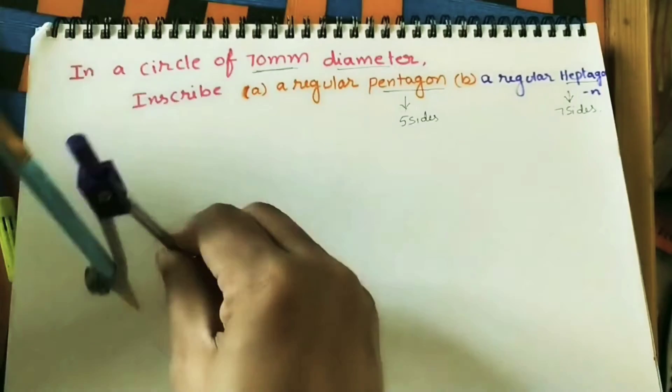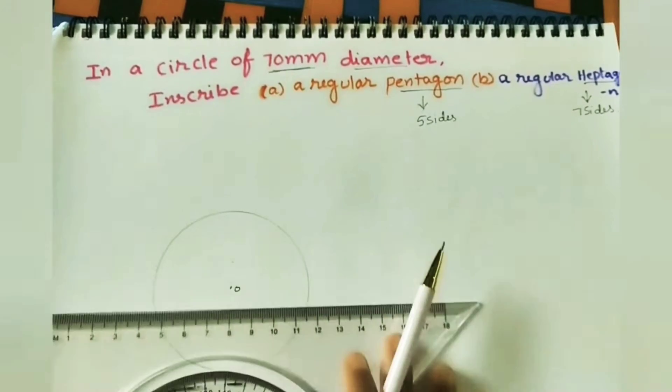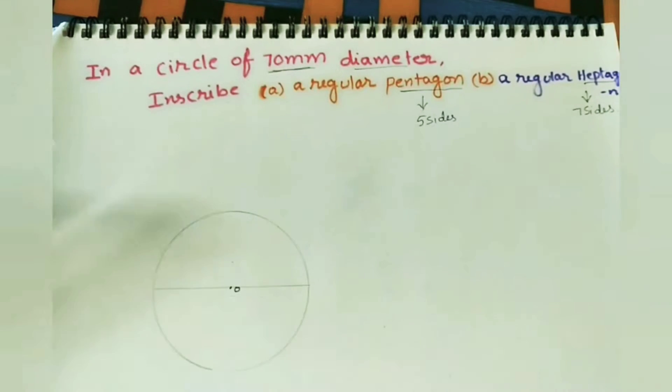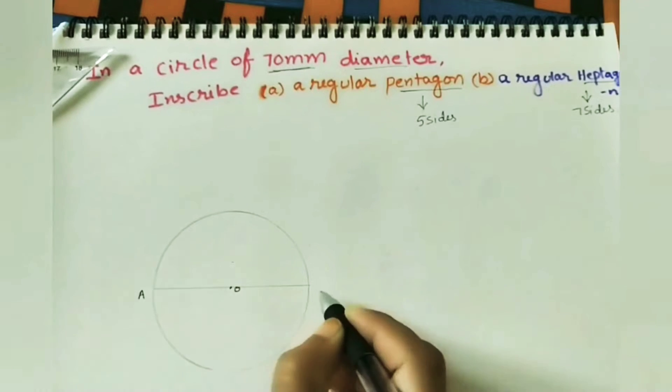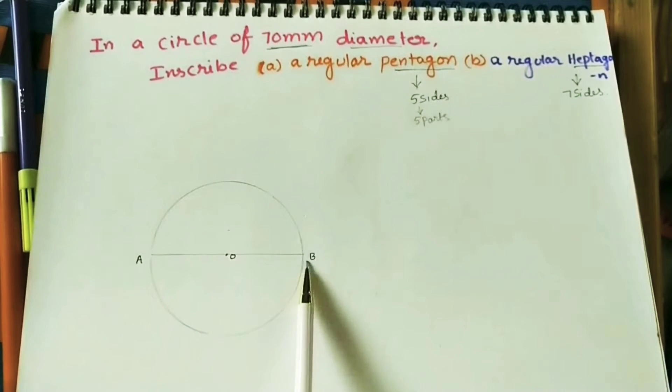And we will do the circle by using compass. Mark center. Do the diameter, horizontal diameter. Now divide this diameter, I am giving AB name. Divide this diameter into 5 parts. Because for pentagon it has 5 parts.